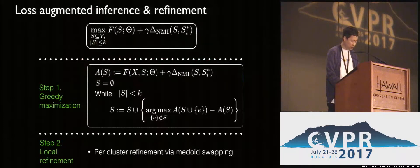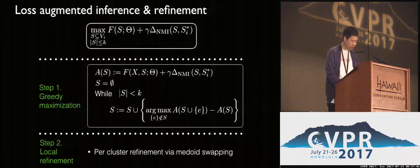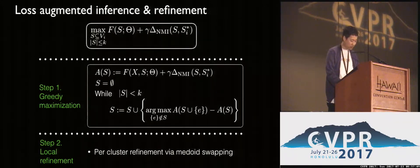We first approximately optimize the loss of method inference via greedy set maximization. This procedure incrementally selects cluster prototypes which provide the best marginal benefit to the facility location score. Then we refine the greedy solution by looping over each cluster, swapping the cluster prototype with any other cluster element which increases the score. We repeat this procedure for a fixed number of iterations.